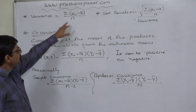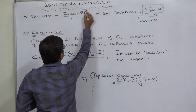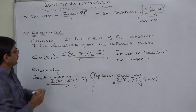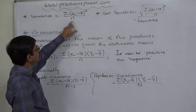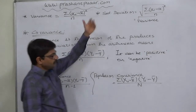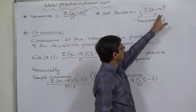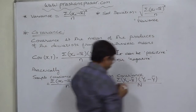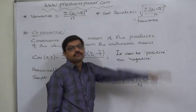Variance is the mean of the squared values of the deviations taken from arithmetic mean — according to Carl Pearson. And on the other hand, standard deviation is the positive square root of the mean of the squared values of the deviations taken from arithmetic mean. Or simply, standard deviation is the positive square root of variance.